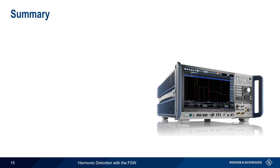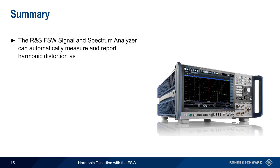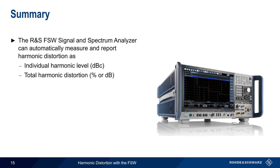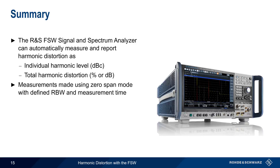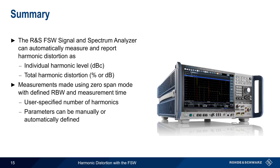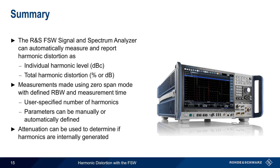The Rohde & Schwarz FSW series of signal and spectrum analyzers can automatically measure and report harmonic distortion, both for individual harmonics as well as total harmonic distortion. Harmonic distortion power measurements are made in zero-span mode using a configured resolution bandwidth and measurement time. In most cases, the user only needs to specify the number of harmonics of interest. Note that attenuation can be used to help determine if the measured harmonics are being generated within the spectrum analyzer itself. This concludes our presentation. If you'd like to learn more about spectrum analyzer measurements or the FSW, please see the links in the video description. Thanks for watching.